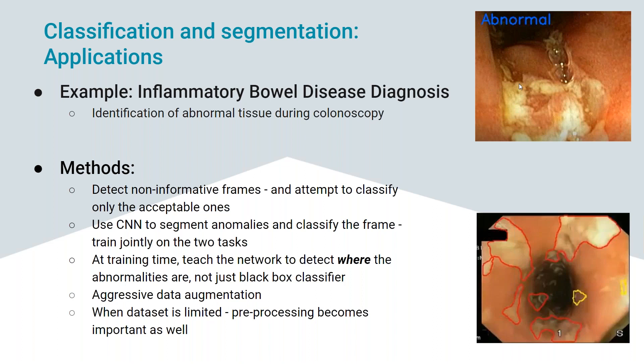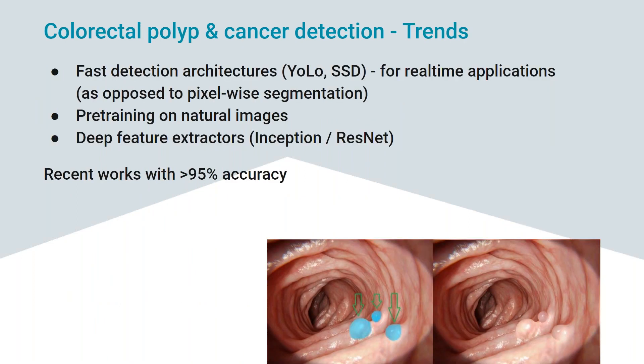A more common task in GI is polyp detection and cancer detection. People have been going after this challenge for many years, and in the last few years with deep learning, this is actually working. The trends are moving to fast detection architectures like YOLO and SSD to achieve real-time detection, giving up pixel-wise segmentation but getting fast real-time detection. People are using a lot of pre-training on natural images and deep feature extractors. These are the more recent best practices, with accuracy now reaching over 95%.